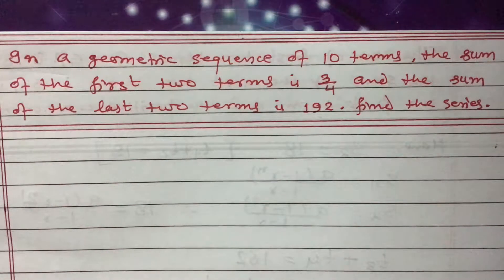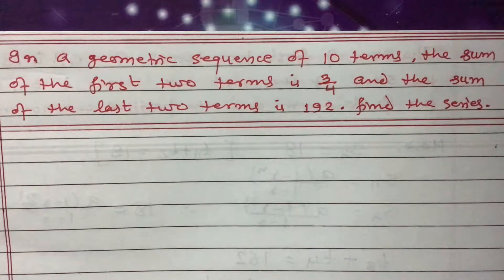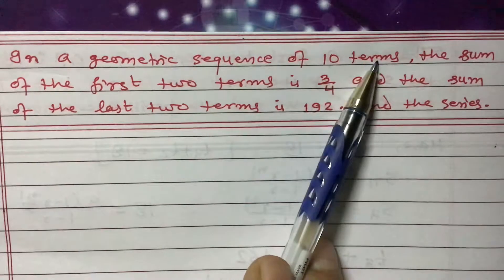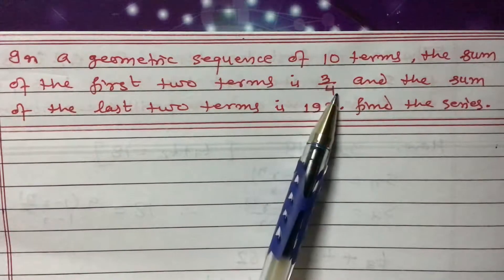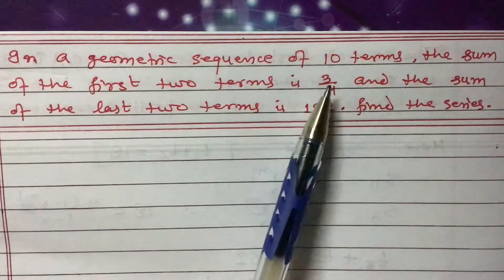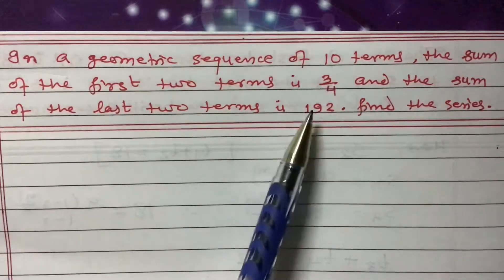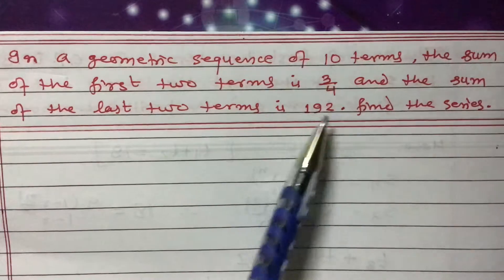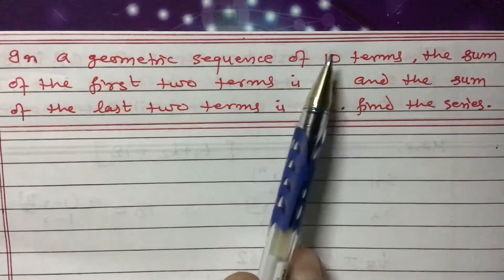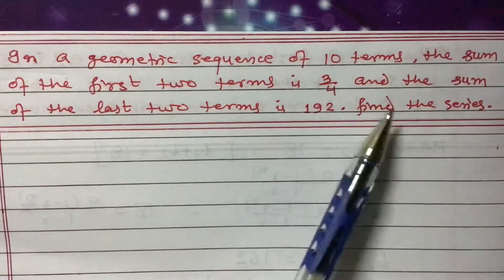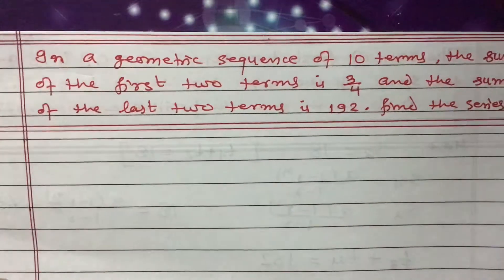Today I am going to teach you one question related to geometric sequence. In a geometric sequence of 10 terms, the sum of the first two terms is 3/4 — that is, the first term and second term added together equal 3/4. The sum of the last two terms is 192 — the ninth term and the tenth term add up to 192. We need to find the series.